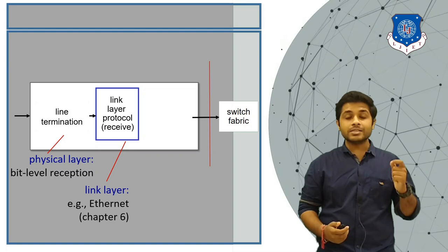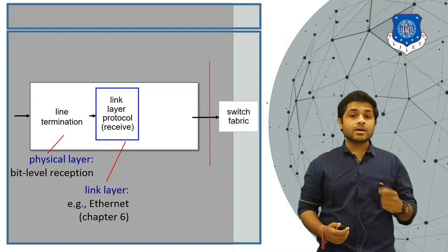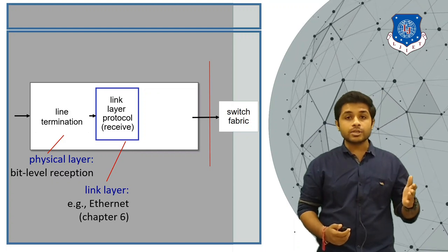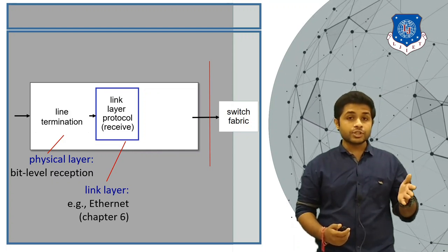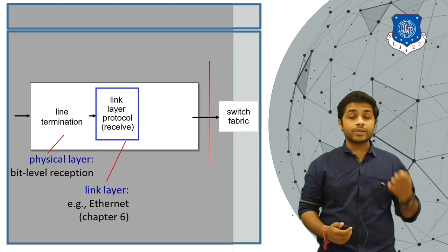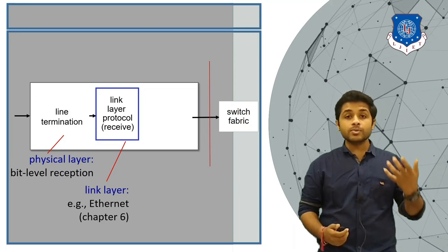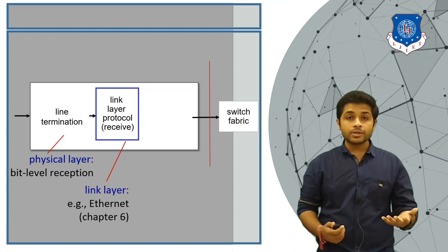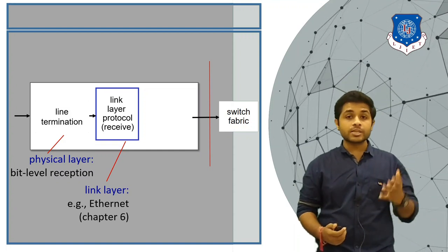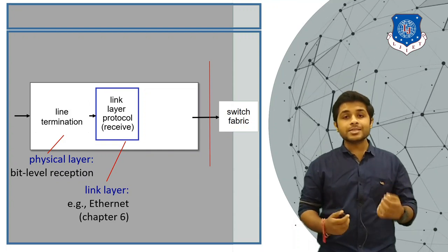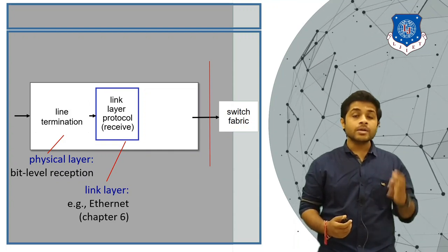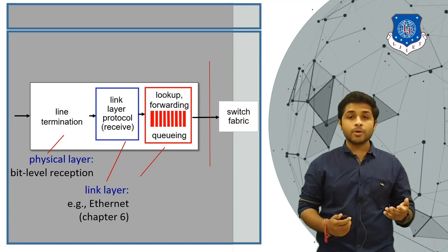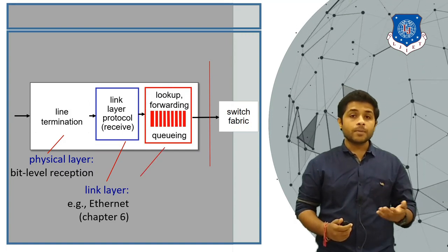The next block is called the link layer protocol, situated in the data link layer. When signals are received at the line termination, the link layer will analyze the signal — it will check whether the received signal has a proper MAC address and whether the received signal contains any error. All responsibilities related to the link layer are performed in the link layer protocol block. The next block is lookup and forwarding.